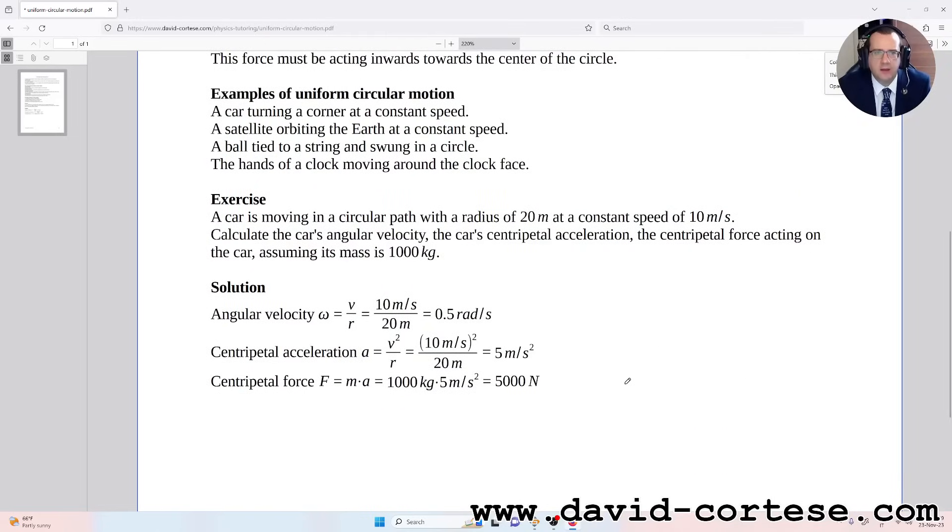A car is moving in a circular path with a radius of 20 meters at a constant speed of 10 meters per second. Calculate the car's angular velocity, the car's centripetal acceleration, the centripetal force acting on the car, assuming its mass is 1000 kg. This is the solution.